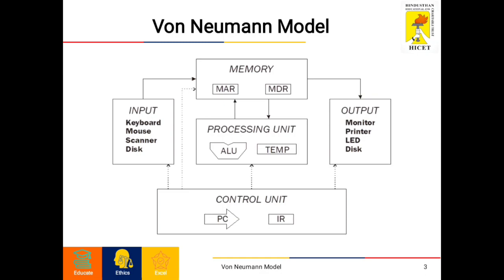MAR is the memory address register and it comes under memory in this block diagram. The memory address register stores the memory location of the instruction that needs to be fetched from memory or stored in memory. The next one is MDR, memory data register. Like MAR, MDR is also a part of memory. It stores instructions fetched from memory or any data that is to be transferred to or stored in memory.